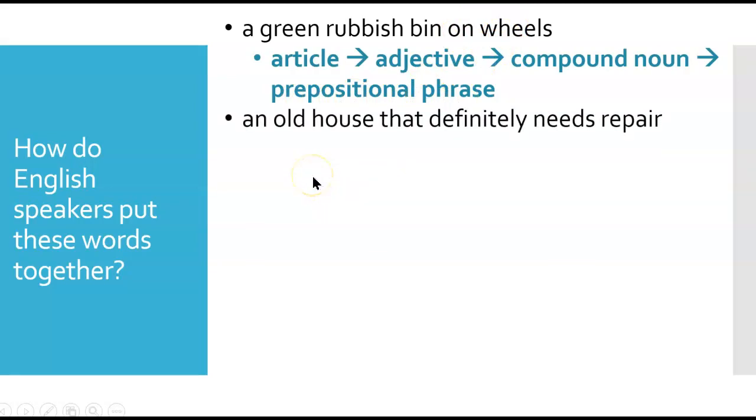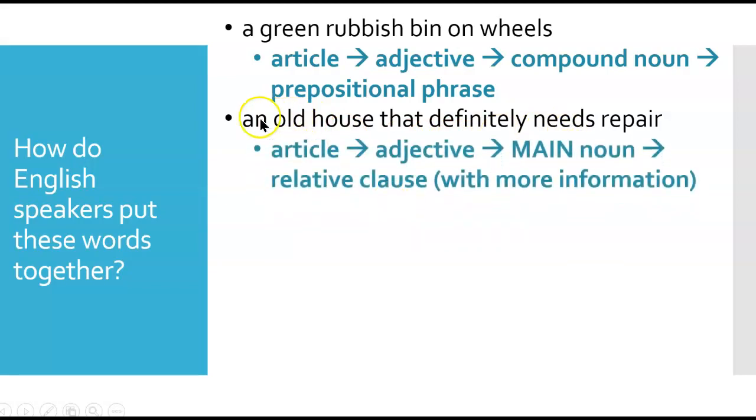Here's the second one: an old house that definitely needs repair. Article again. A bin, a house. Or in this case, we need 'an' old because O is the beginning of the next word. So 'an' is the article, old is the adjective, house is the main noun. That starts the relative clause with more information.